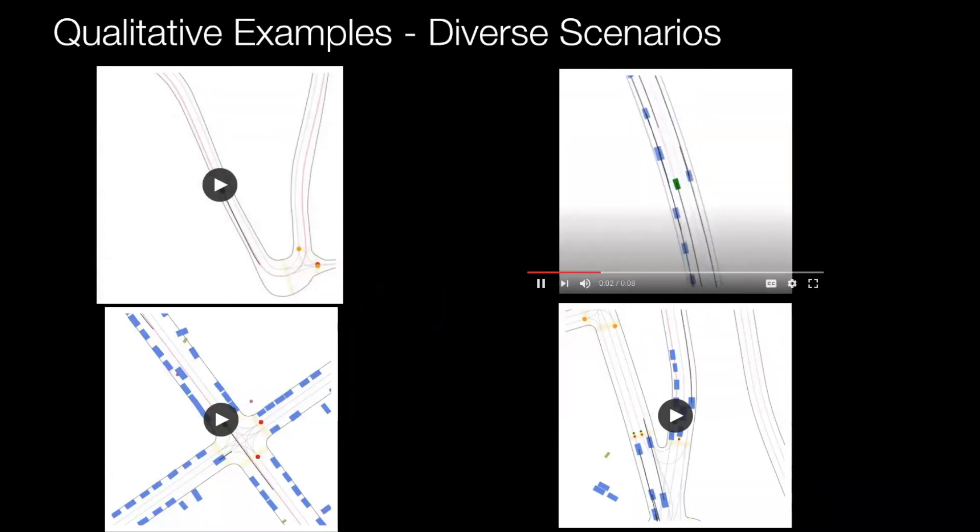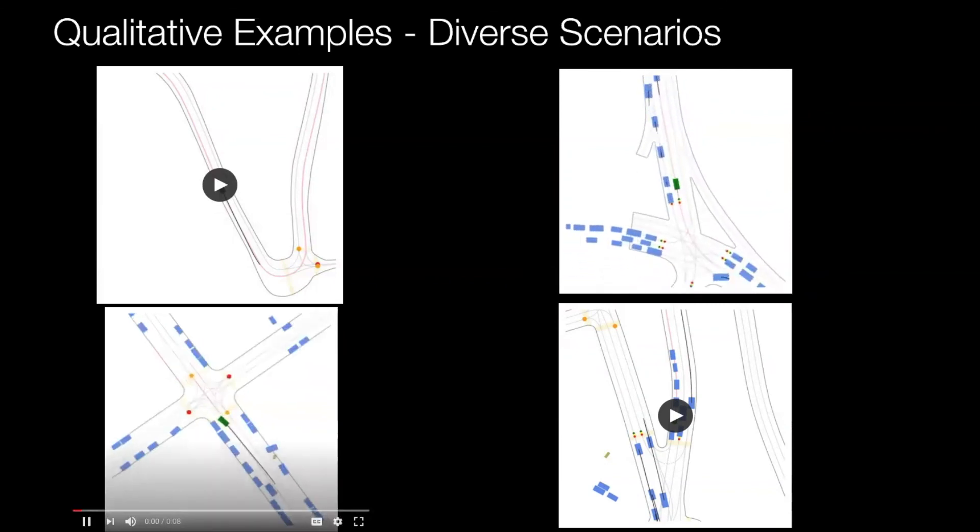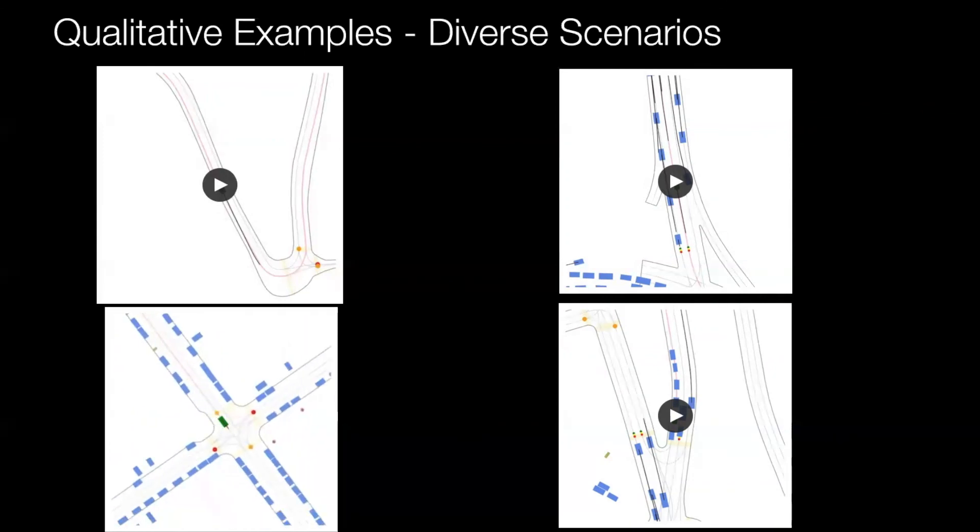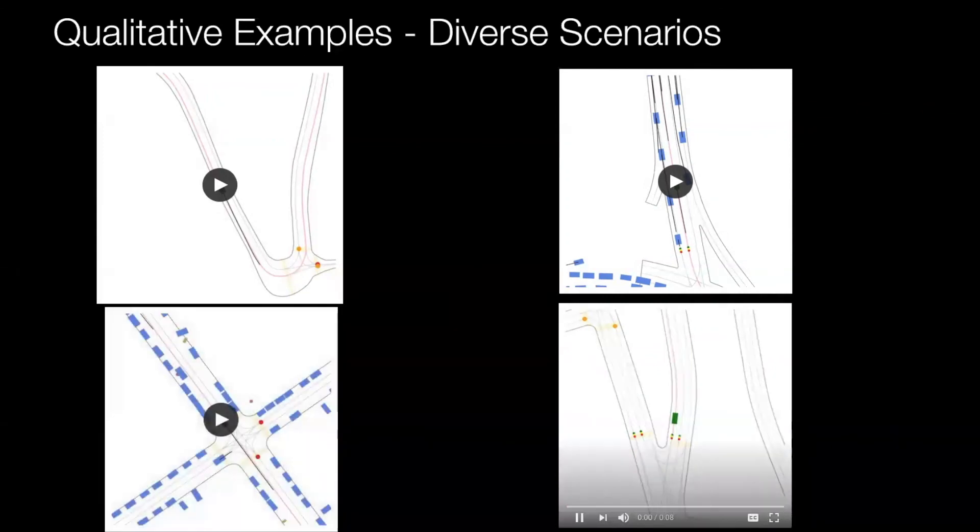The second example contains mostly dynamic actors with uniform velocity. The third scenario contains mostly static vehicles and there is high speed variations in the SDV motion. And in the final scene, the SDV is stopped at an intersection with low actor class diversity.